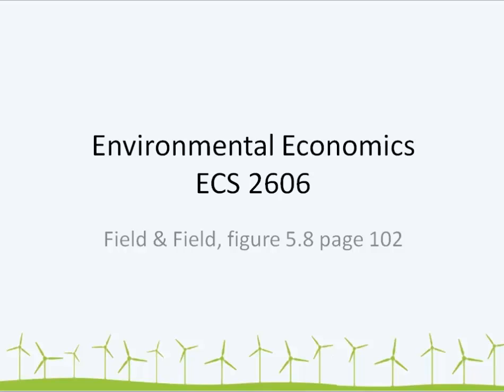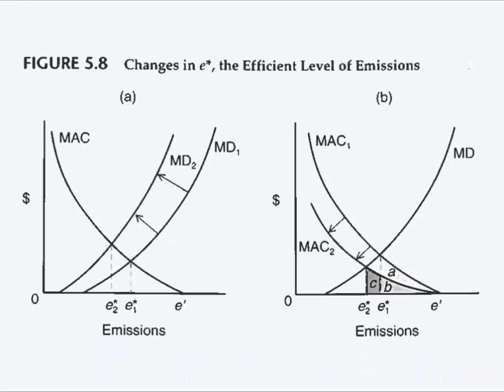Today we're looking at figure 5.8 on page 102 of your textbook. This figure gives you two examples of how changes in the marginal damage or changes in the marginal abatement cost can influence the efficient level of emissions.